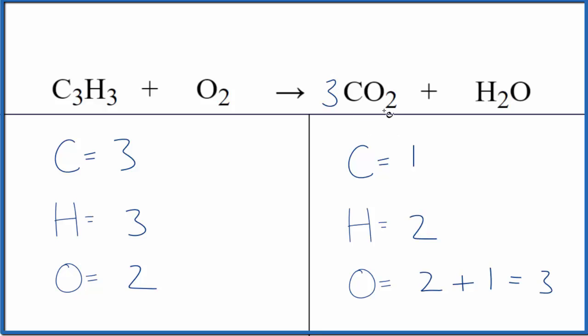Let's put a three in front of the CO2, because one times three will give us three carbon atoms. Those are balanced. Let's update the oxygens. Three times two is six, plus we have the one here. That gives us seven oxygen atoms.